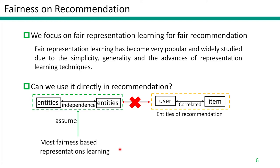We focus on fair-representation learning for recommendation. Can we use it directly? Most fair-representation learning approaches assume the independence of entities and eliminate unfairness of each entity independently, without modeling correlations with other entities. In a recommender system, users and items naturally form a user-item bipartite graph and are correlated in the system. This correlation breaks the independence assumption in previous fair-representation models.